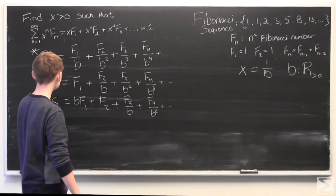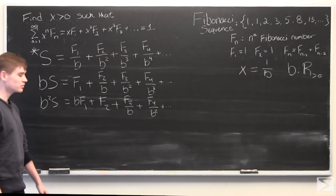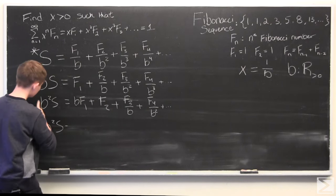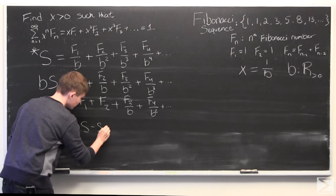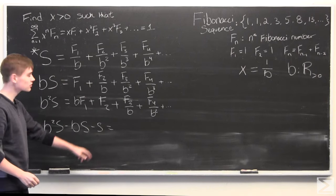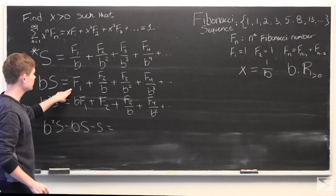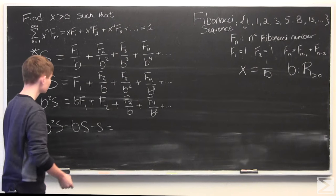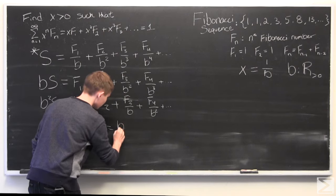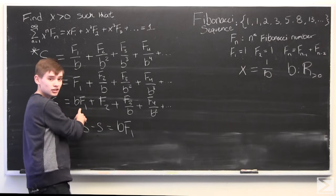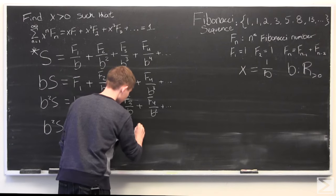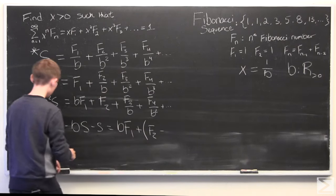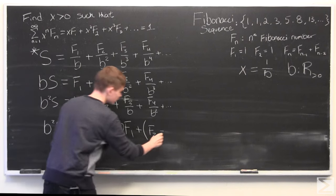And now what we're going to do is do a little bit of sequence manipulation. And we're going to say, b squared s minus bs minus s. And we're going to group these in terms of their coefficients of b. So, we have b times f1, and we have f2, and since we're subtracting bs minus f1.